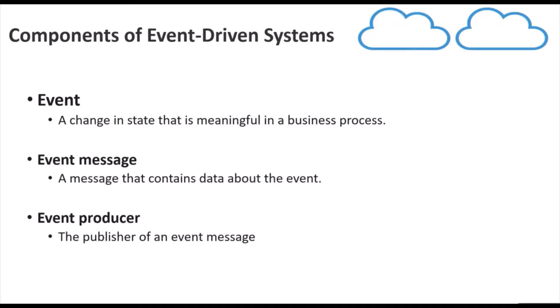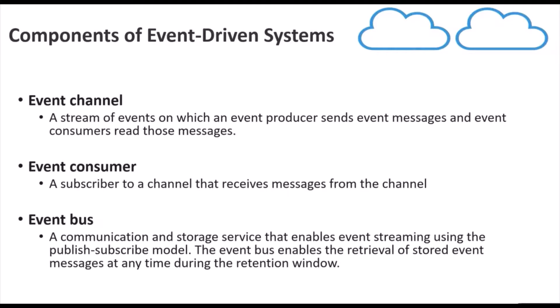Next is event producer. The publisher of an event message is nothing but the event producer. In our online shopping system, whenever an order is placed, it will produce an event so that other systems can listen to the event that an order has been placed. So in that case the online shopping system is our event producer. Next is event channel — a stream of events on which event producers send event messages and event consumers read those messages is nothing but an event channel.